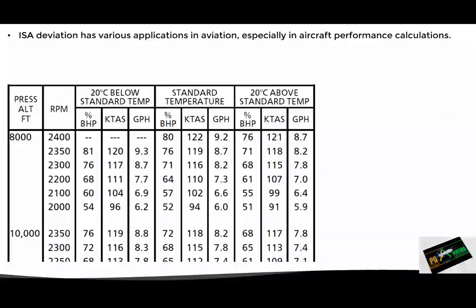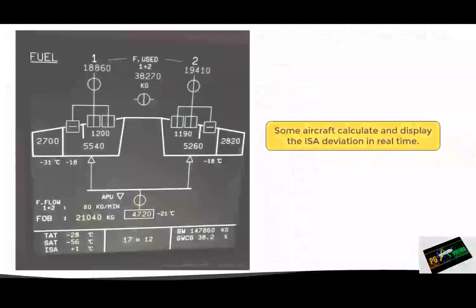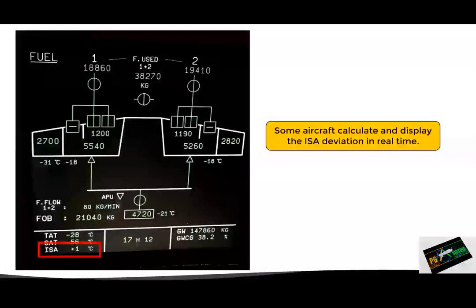Let's see an example of how this information can be used. Here we have a typical cruise performance table for a light aircraft. It takes into account different conditions and parameters in order to show the expected aircraft performance — one of these is the air temperature. As we can see in the upper row, the temperature is expressed in terms of ISA deviation. For example, the middle column corresponds to ISA conditions, so this should be used only when the ISA deviation is zero. In the left column we can see ISA minus 20, and on the right side ISA plus 20. In order to properly use the table, the pilot must first determine the ISA deviation and then use the corresponding column. In some aircraft it is not necessary to manually calculate the ISA deviation, since these aircraft have systems that automatically calculate the deviation in real time.